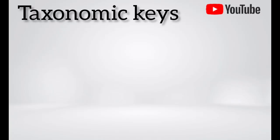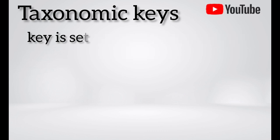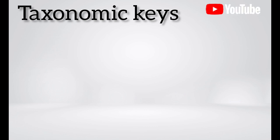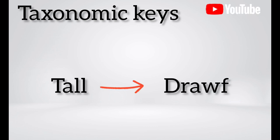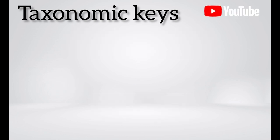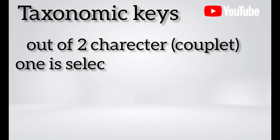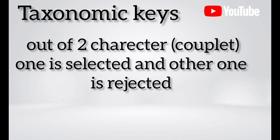A taxonomic key is a set of alternate statements of character. For example, 'tall' and 'short' are two contrasting characters — we call this a couplet. Each statement or character of a couplet is called a lead. Out of two characters, one is selected and the other is rejected.